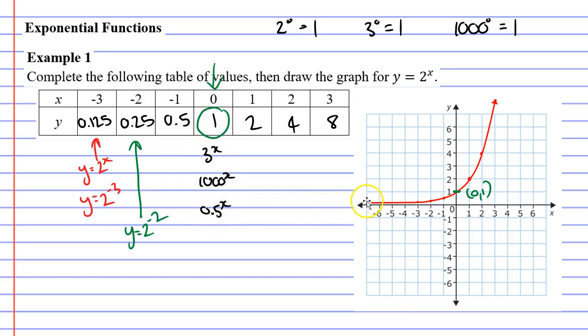Which is why many times when you see exponential graphs, they pass through the number 1 here, or the point 0, 1. Now this isn't always the case for exponential graphs, and I will be showing you situations where this doesn't happen.